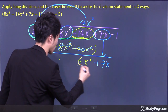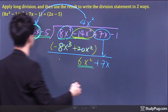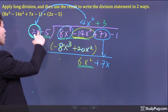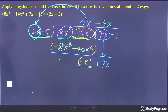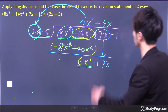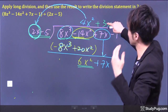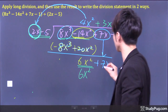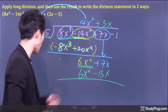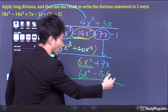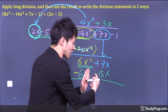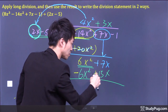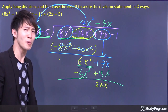From 2x to 6x², we need to multiply by what? From 2 to 6, multiply by positive 3; from x to x², multiply by x. So the next quotient term is 3x. Multiplying back: 3x times 2x is 6x², and 3x times negative 5 is negative 15x. Attaching a negative sign to the bottom: 6 minus 6 is gone, and positive 7 plus 15 gives positive 22.